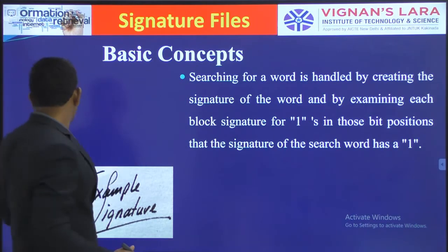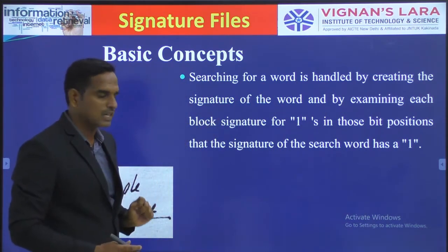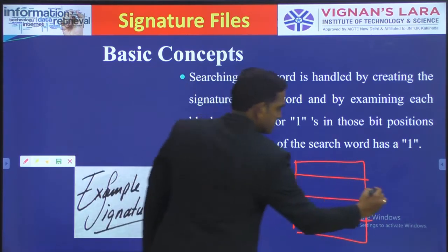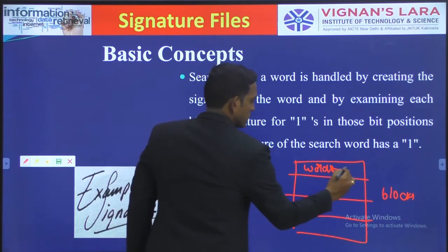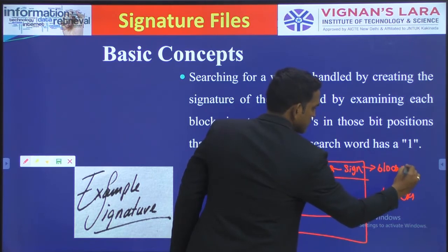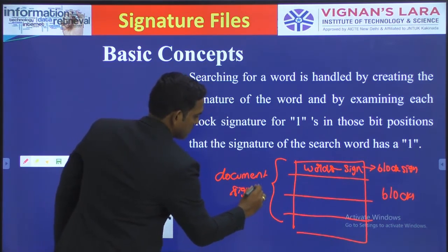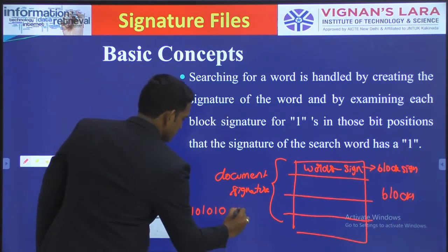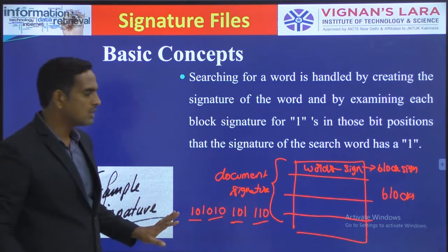So to summarize the basic concepts: f and m are design parameters where f is the total number of bits in the signature and m is the number of bits set to 1. Word signatures are ORed together to form the block signature, and block signatures are concatenated to form the document signature. The m bit positions set to 1 by each word are decided by hash functions.